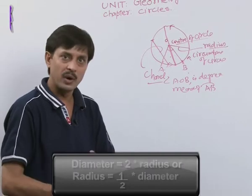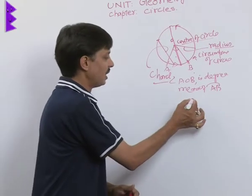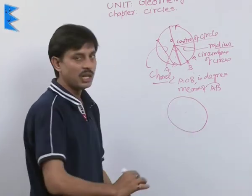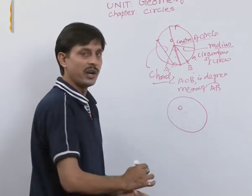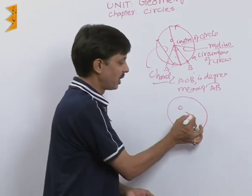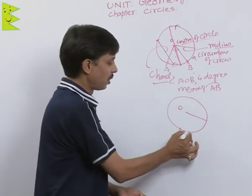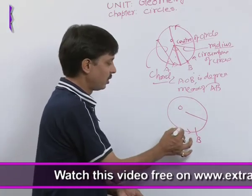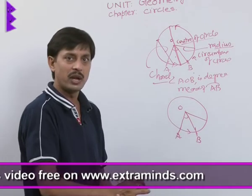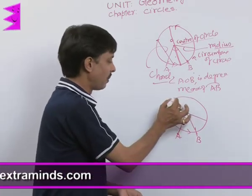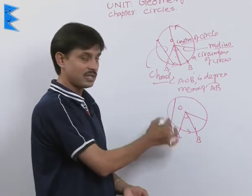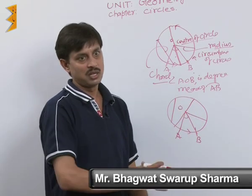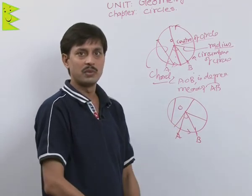To recap the introductory points: a circle is the set of all points in a plane which are at equal distance from a fixed point. The fixed point is the center. The line segment joining the center to the circle is the radius. A part of the circle in anti-clockwise direction is the arc; when joined to the center, the angle formed is the degree measure. Any line segment joining two points of the circle is a chord; a chord passing through the center is the diameter. We will now discuss some other important components of the circle.